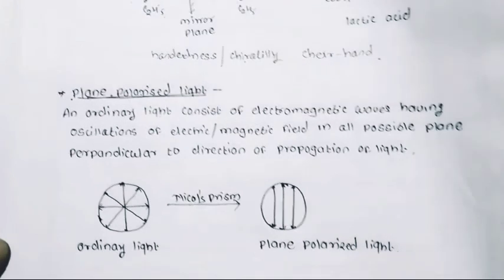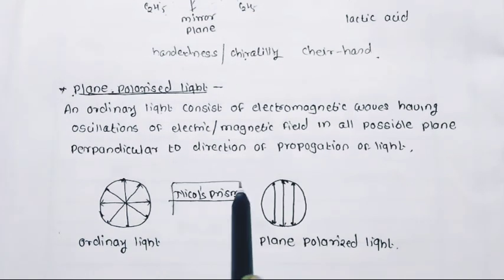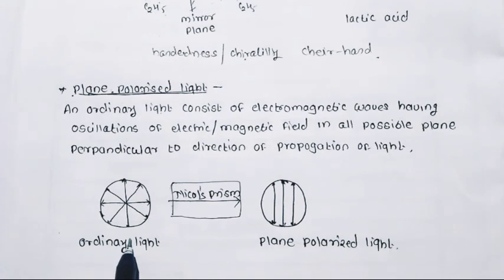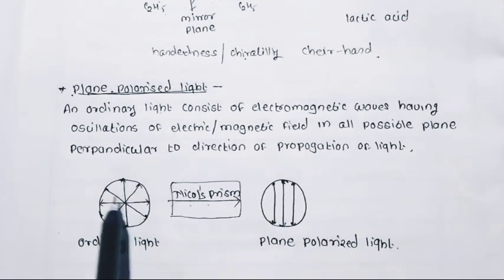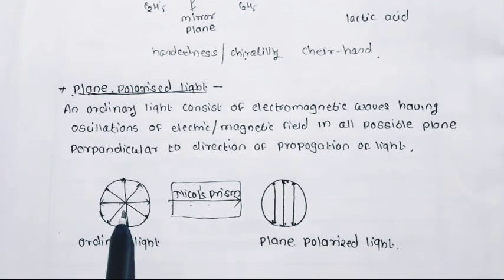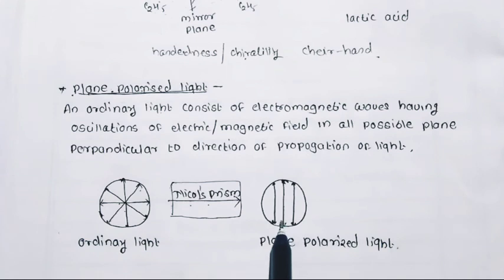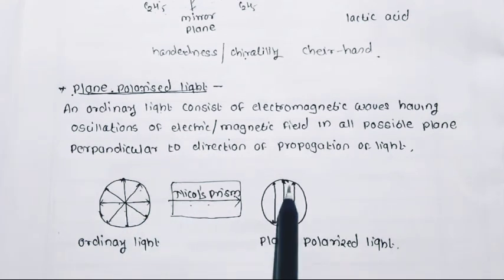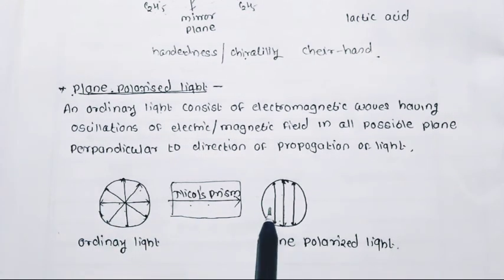When this ordinary light is passed through a Nicol prism, these waves vibrate in only one plane. Ordinary light vibrates in all possible planes, but when it is passed through a Nicol prism, it vibrates in only one plane perpendicular to the direction of propagation. Such light having vibration in only one plane is called plane polarized light.